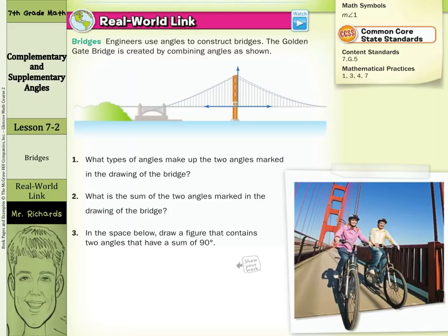Our real-world link is on bridges. Engineers use angles to construct bridges. The Golden Gate Bridge is created by combining angles as shown. You can see we have the line and the ray, so we have these two angles right there.